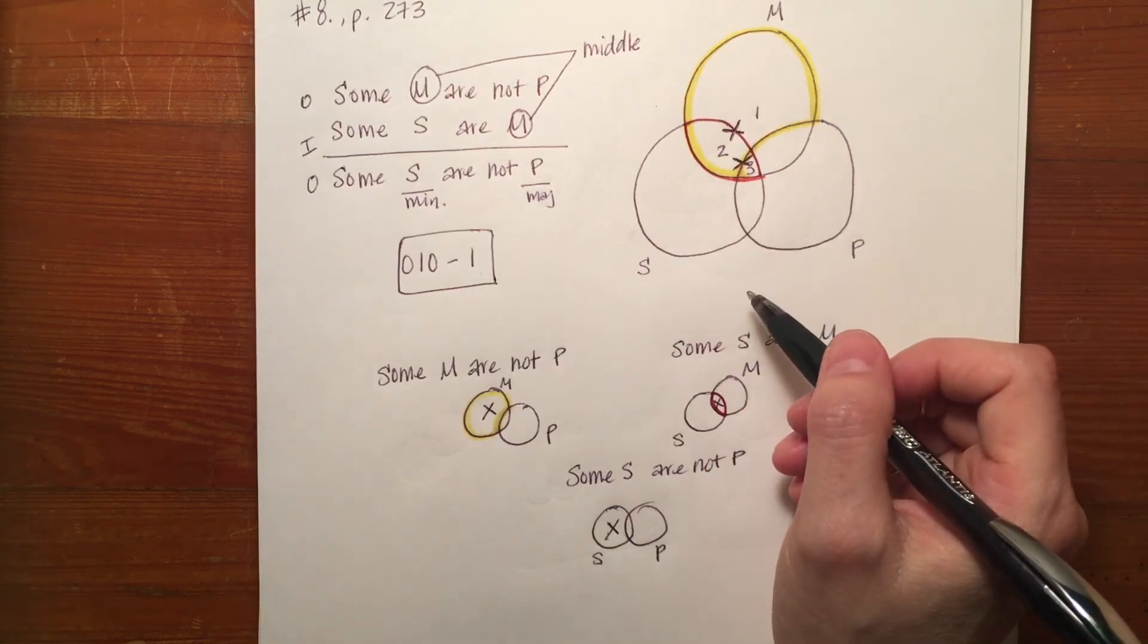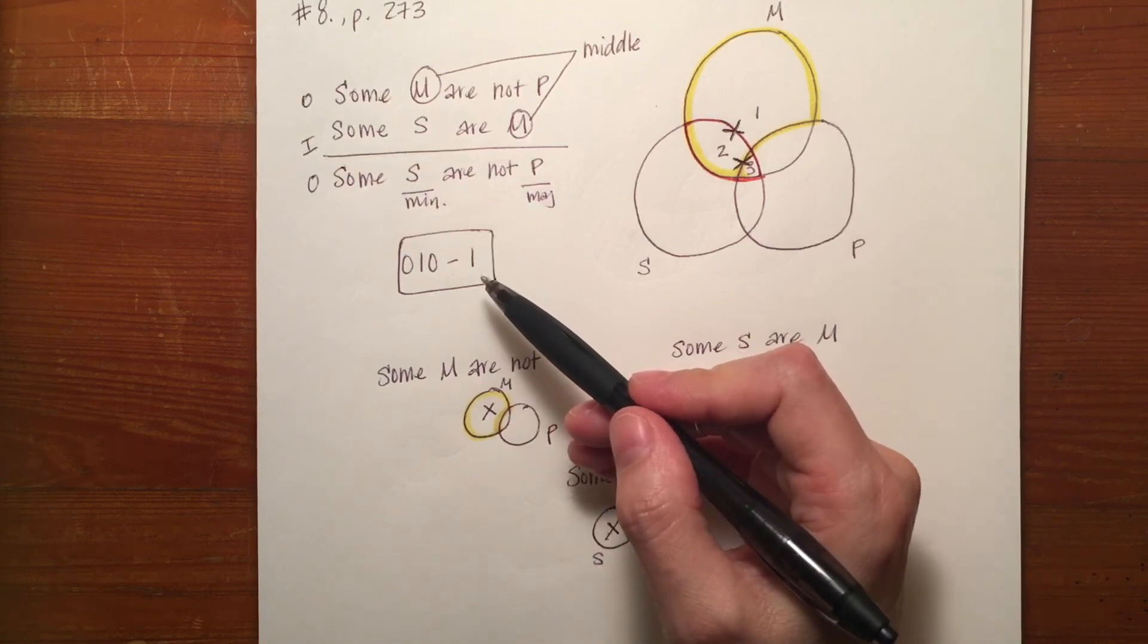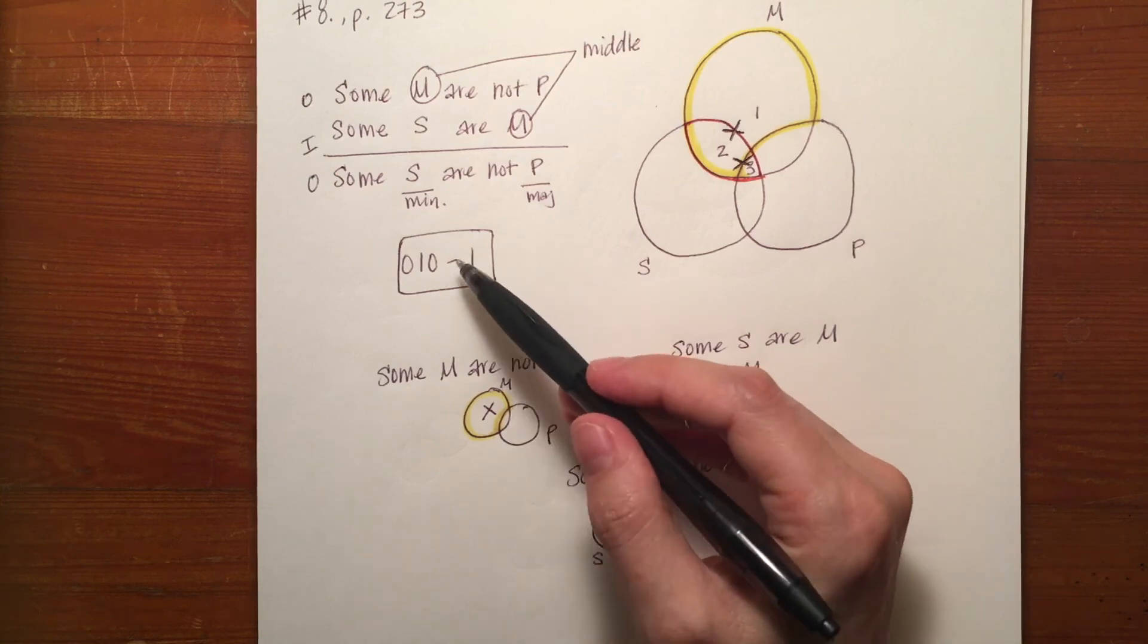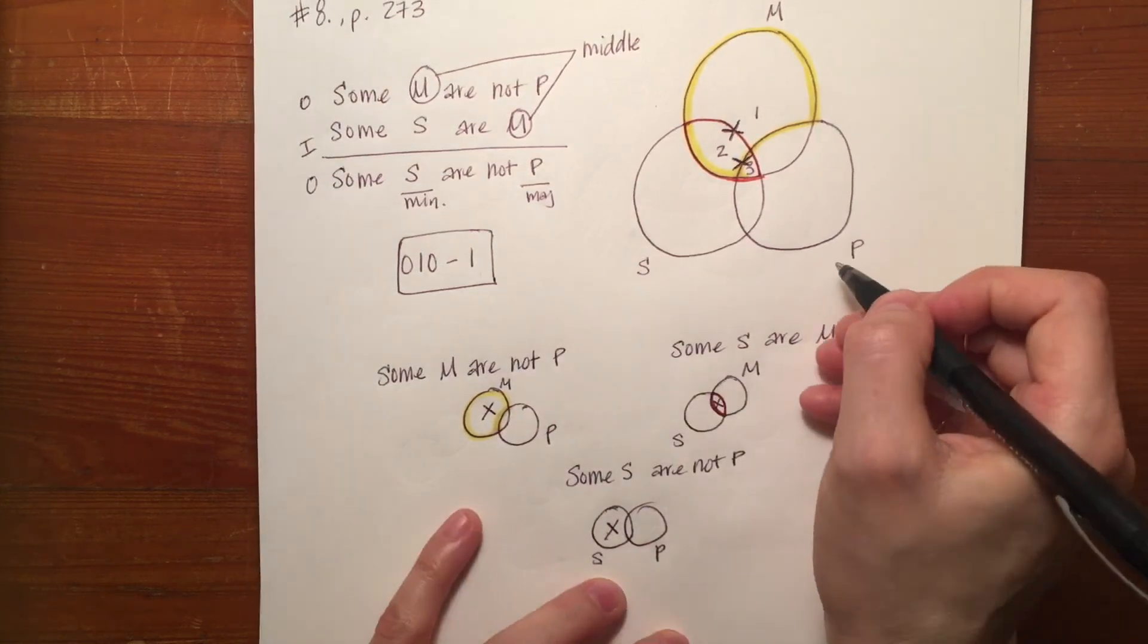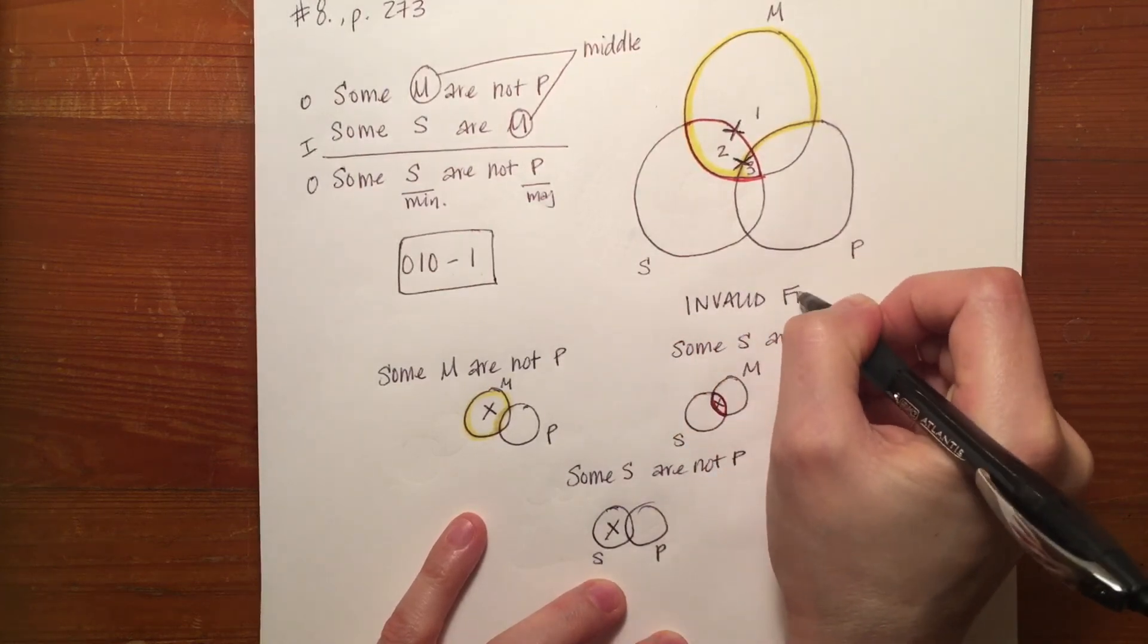But let's make certain we go to figure one under unconditionally valid forms and it's not there. OIO is not there. It's also not under conditionally valid forms under figure one. So we're right. It is invalid from both perspectives.